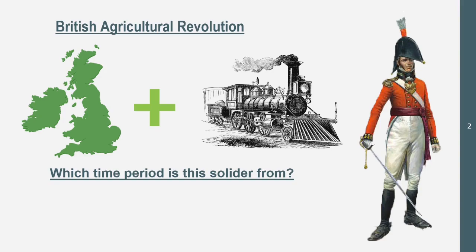We got the train on the right and then Britain on the left. Now look at this British soldier on the right — what time period is this soldier from? I just said that it coincided with the Industrial Revolution. If you don't know what the Industrial Revolution is, I'm so sorry about that. We'll get into that in a later topic when we get into development, less developed countries, more developed countries, urbanization, types of jobs, all that cool stuff in the future. But for now, it's from the 1800s, of course. That's when the Industrial Revolution happened, and that's when the second agricultural revolution happened.